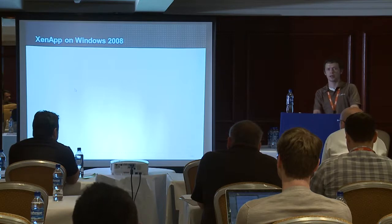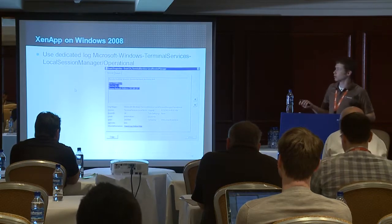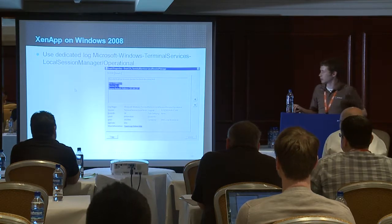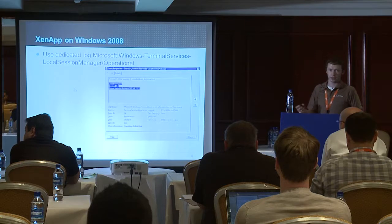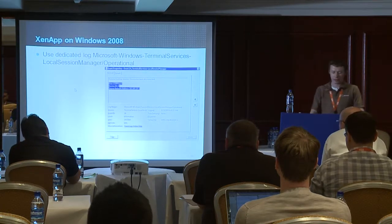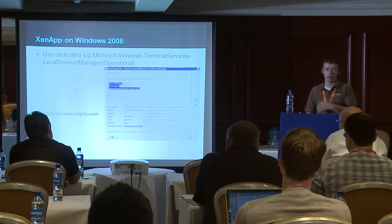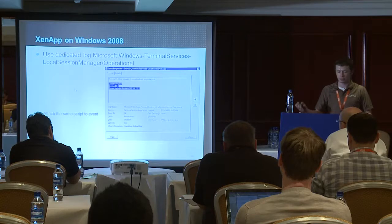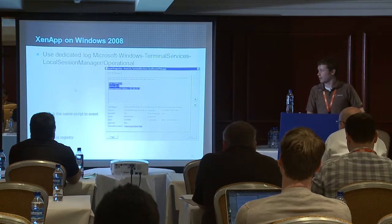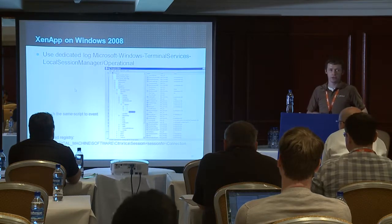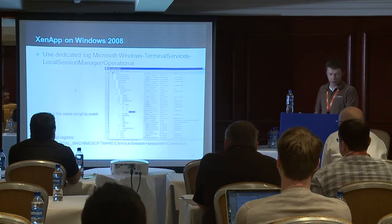On Windows 2008 with XenApp 5, 6, or 6.5, there is a dedicated log for terminal services where you can find every event for connection, disconnection, reconnection, user logon, and user logoff. What's great with Windows 2008 and higher is that you can attach actions to any event. To collect this data to a plain text log file, use the same script and attach it to the event. You can also read registry on each event — all information about what client and IP address it was can be found in the registry.